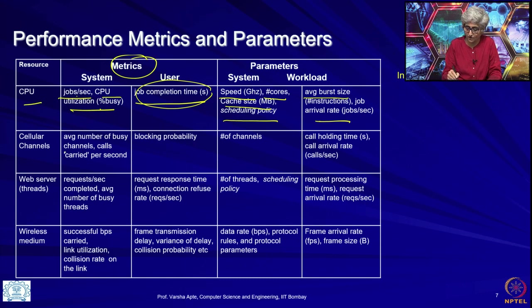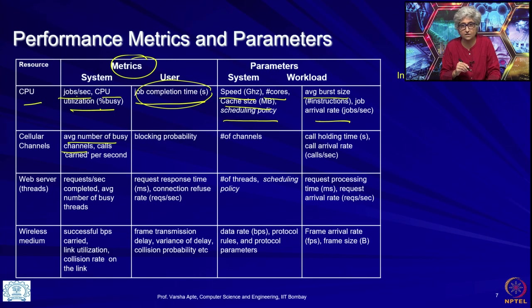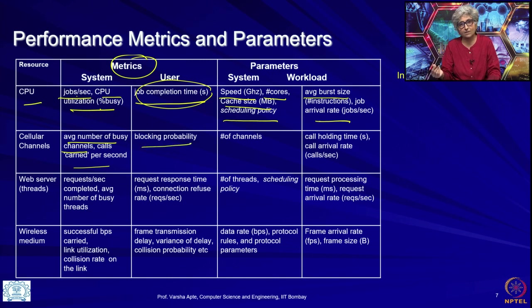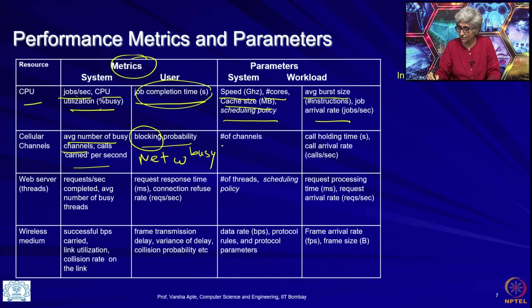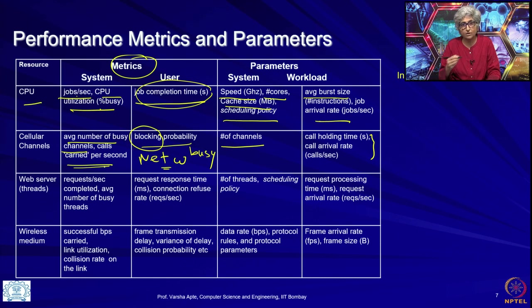For cellular channels, the cellular network owner will be interested in the average number of busy channels in a given period, call volume, and how many calls are successfully completed per hour. The user will be interested in blocking probability — the probability that you tried to dial and got a network busy signal. Parameters include number of channels; with fewer channels more people will get network busy. From the workload side, how long users talk on the phone directly impacts how many calls per hour can be successfully carried.